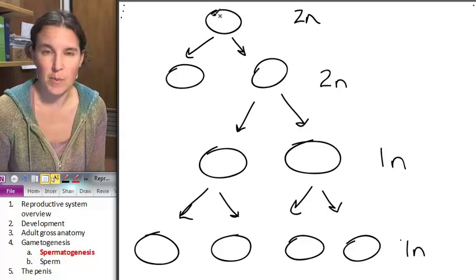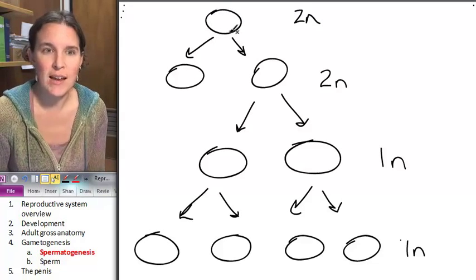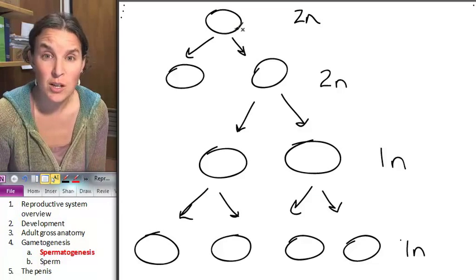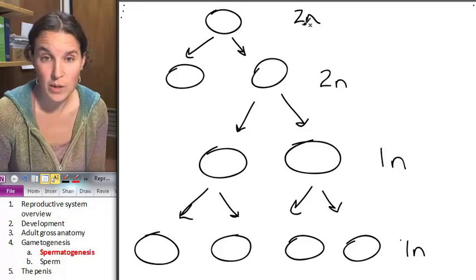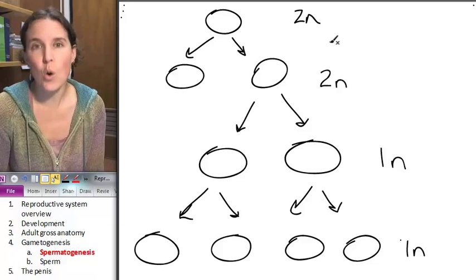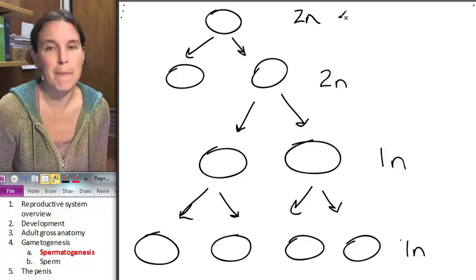My first cell at the top of this little diagram, the granddaddy of all cells in this picture, this is a diploid cell, 2N. This cell, of course, has a name. It's called a spermatogonium.